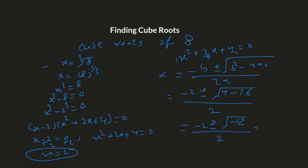After simplification, we write the square root of twelve as two times root three, and the negative under the radical gives iota. So root negative twelve equals two root three iota. Taking two as a common factor from the numerator gives negative one plus or minus root three iota. Therefore the three cube roots of eight are: two, and negative one plus or minus root three iota.